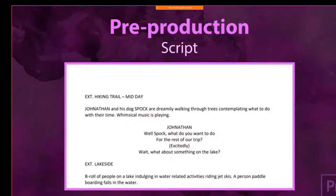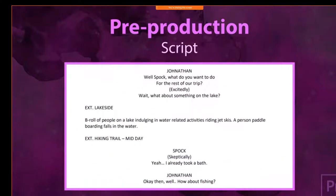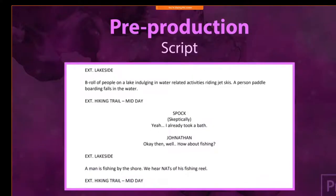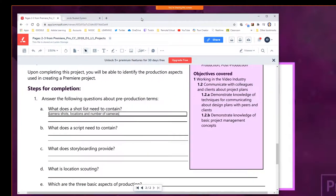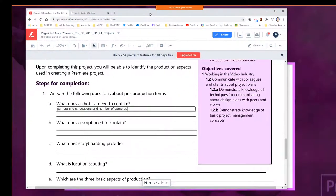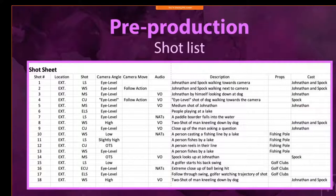Script — this should contain any dialogue included in the video. So this shot list would be for a pretty extensive production. It has 18 shots — or you can think of those as scenes or different camera angles. We'll talk about what these things are. Location: EXT would be like exterior. The type of shot — long shot, wide shot, medium shot. Camera angles and movements.